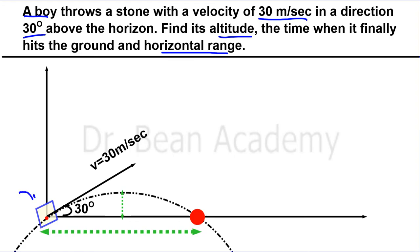So suppose this is a stone and he throws it with a velocity 30 meters per second making an angle 30 degrees with the horizontal line. We need to find the altitude, the maximum height attained by the stone. Then we need to find the time of the total flight - the time it takes for the stone to achieve the maximum height plus the time it takes from the maximum height to hit the ground. And then we will find the horizontal range, which is the horizontal displacement of the projectile from the initial to the final point. So let's go to the solution.